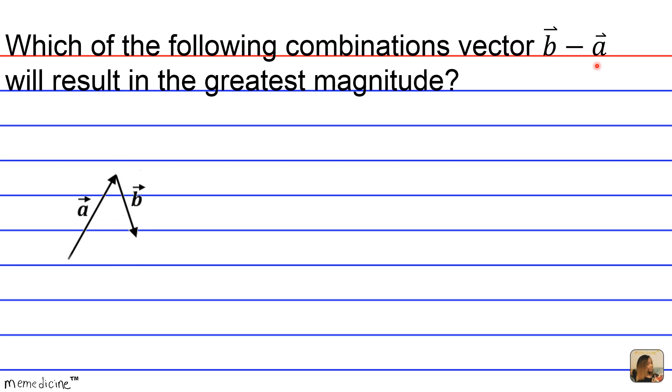Is it combination A, combination B, combination C, or combination D? Again, A is 15 units long and B is 10 units long. I'll give you a moment to think. Definitely press pause if you need to.